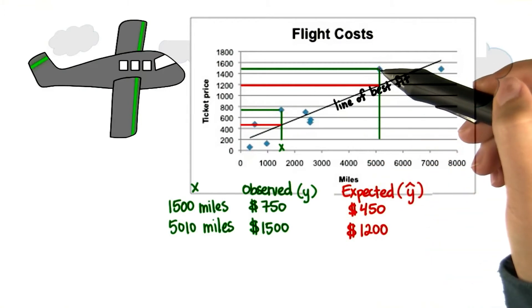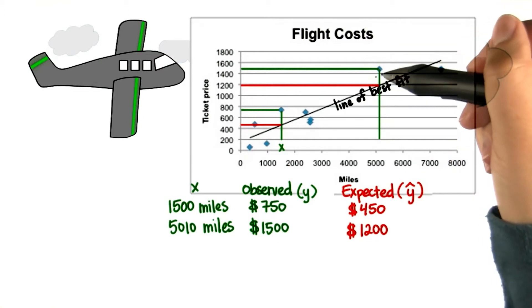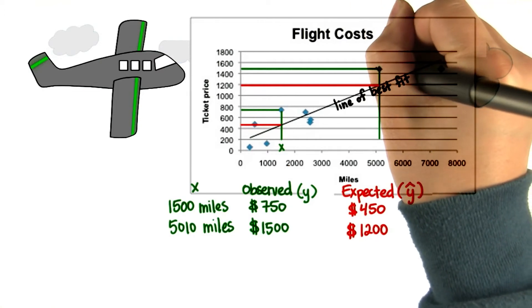The prices for both these flights were more than we would have expected based on all of our data. The difference between our observed and expected value is called the residual.